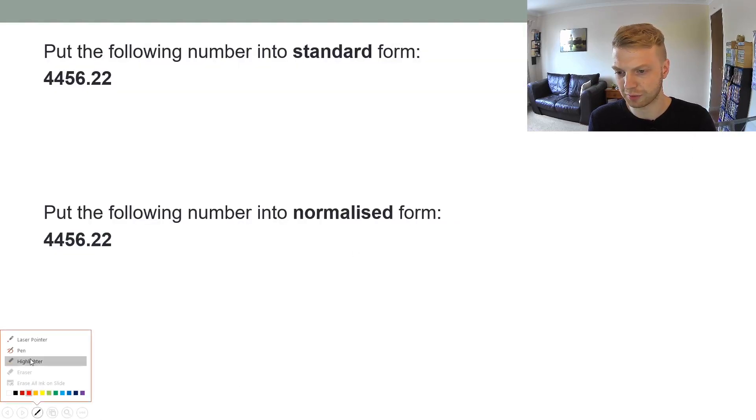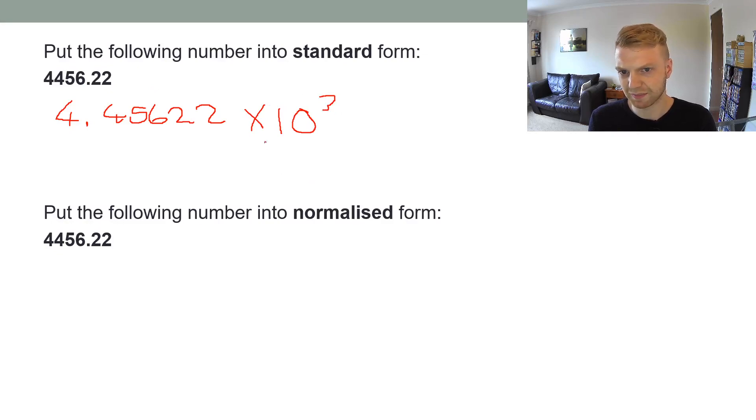If you get this question in maths, put the following number into standard form: 4456.22. You would put a 4 there, then the decimal point right after the first digit, then everything else after it. Then you do times 10, and you count how many places you moved the decimal point—you moved it 3 places, so times 10 to the power of 3. In normalized form in computing, you put a zero at the start: 0.445622, then times 10 to the power of 4.